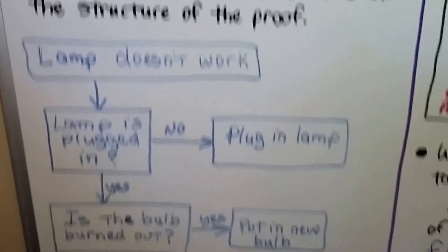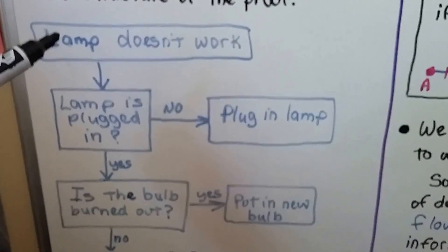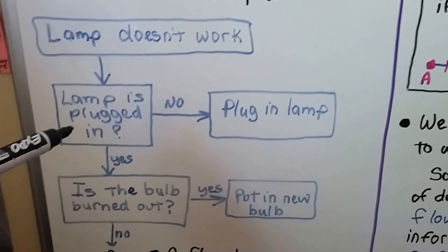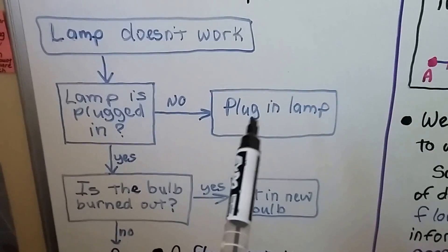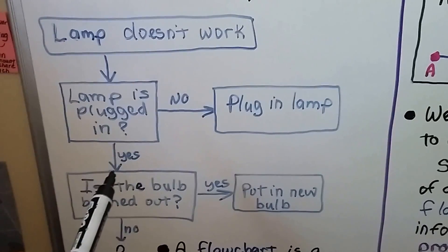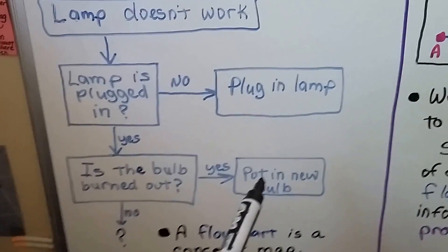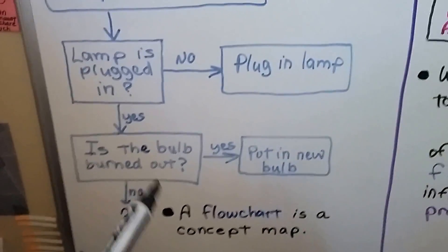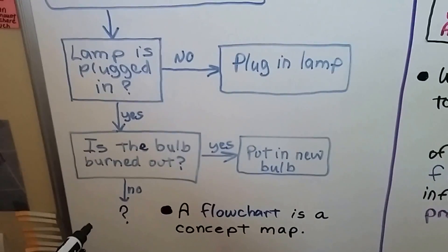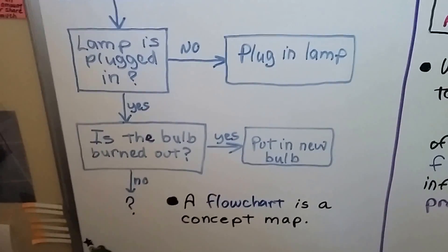So a flowchart looks like this. The lamp doesn't work, so the arrow brings us to a box which asks: is the lamp plugged in? If the answer is no, then we plug in the lamp — problem solved. If the answer is yes, it is plugged in and still not working, then: is the bulb burnt out? We can go sideways to yes, put a new bulb in, solve the problem. Or if it's no, we can continue down further with our train of logic — is the socket broken? Is the electricity in the house turned off? So a flowchart is a concept map.